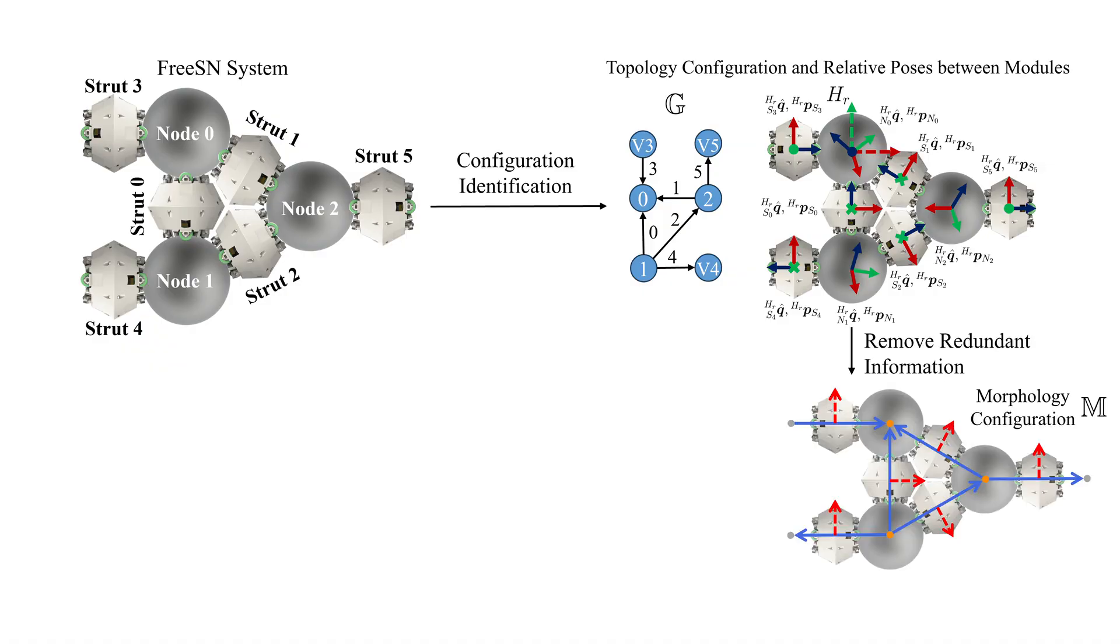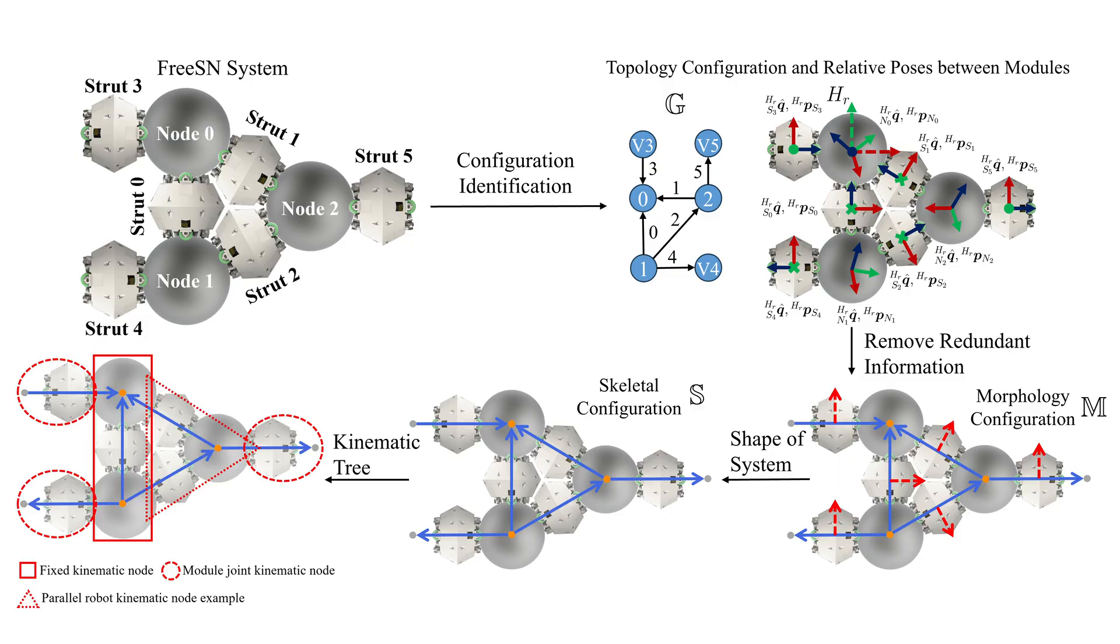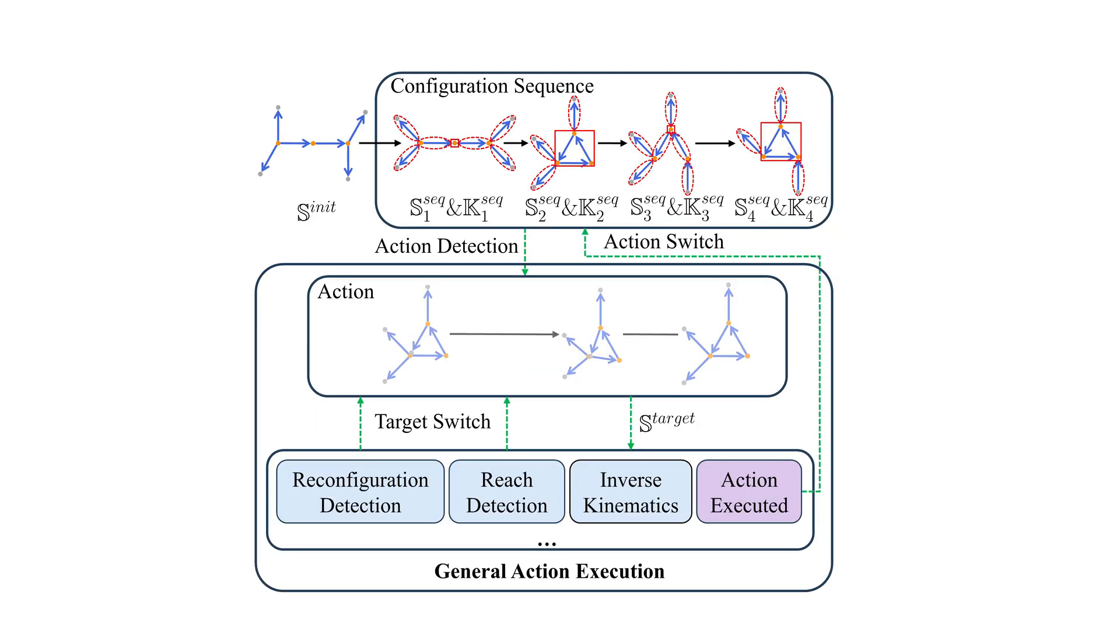In this article, we first propose an autonomy framework for spherical freeform modular robots. We model module connections as either spherical joints or parallel robots, employing a unified approach for skeletal kinematics. The system achieves the target configuration through iterative inverse kinematics and command translation to module controllers, and realizes various locomotion and self-reconfiguration behaviors by achieving a series of targets in sequence.